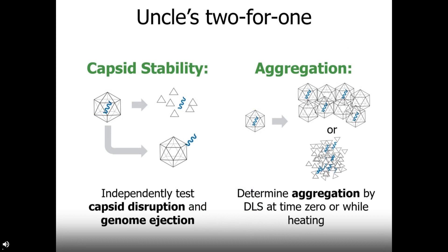Coming back to AAV, UNCLE can deliver two different kinds of stability information: capsid stability and aggregation. For capsid stability, UNCLE uses its fluorescence to measure two different behaviors — protein unfolding and capsid disruption, or genome injection from mostly intact capsids, sometimes called uncoding. We'll look at data from both the literature and from UNCLE to demonstrate those behaviors. On the aggregation side, UNCLE's SLS and DLS capabilities will identify when aggregation occurs — either at time zero to confirm your sample is monodisperse, or during a thermal ramp as a measure of colloidal stability.